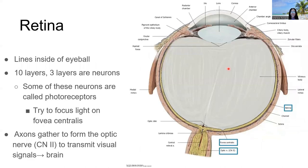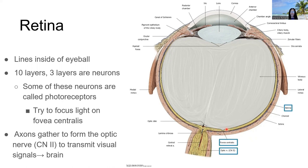The retina is the internal sensory layer of the eyeball, made of about 10 layers, three of which are neurons. These neurons contain photoreceptors responsible for detecting light. The aim is to focus light onto the fovea centralis by changing the size of the pupil and the shape of the lens. Once light hits that spot, the nerve endings or axons forming the optic nerve pick up that light using photoreceptors and conduct those messages as electrical signals on the optic nerve to other parts of the brain.